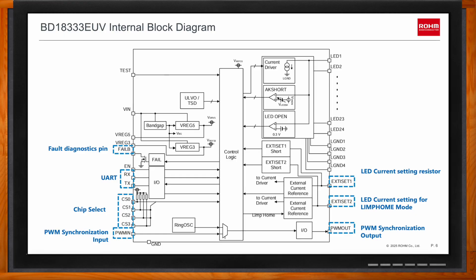On the right-hand side, we have the external current setting pins — XD Set 1 and XD Set 2. XD Set 1 configures the default LED string current, and XD Set 2 determines what that LED current will be in case the device loses communication and enters limp home mode. The bottom pins, PWM In and PWM Out, are used to synchronize across multiple drivers.